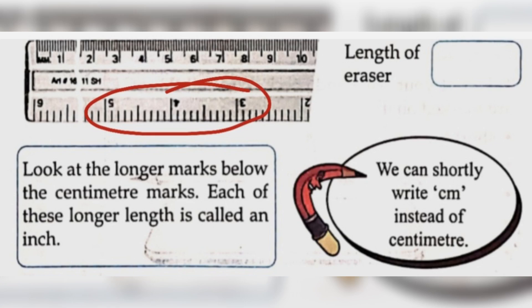Look at the longer marks below the centimeter marks. Each of these longer lengths is called an inch. We can shortly write CM instead of centimeter.